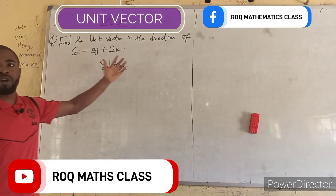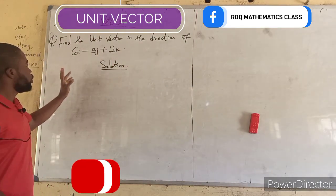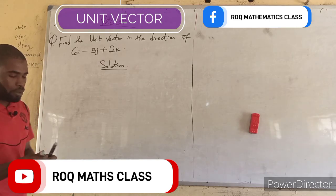Today, we want to find the unit vector of the direction 6i minus 3j plus 2k.